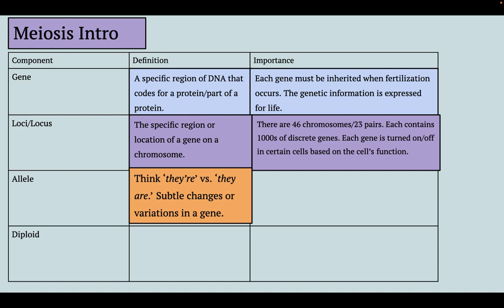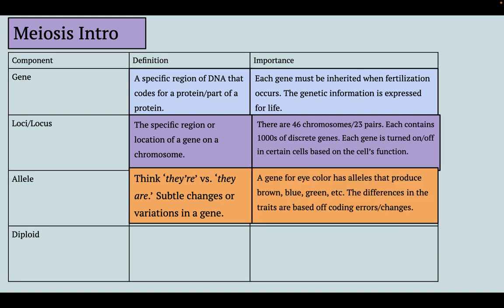Alleles are very subtle changes or variations in a gene. Think of 'their' versus 'they are' — the meaning is the same but the underlying structure is a little bit different. With alleles we're thinking about a specific gene and variations within that gene. For example, you have alleles for genes that code for your eye color that might code for brown, blue, green, etc.